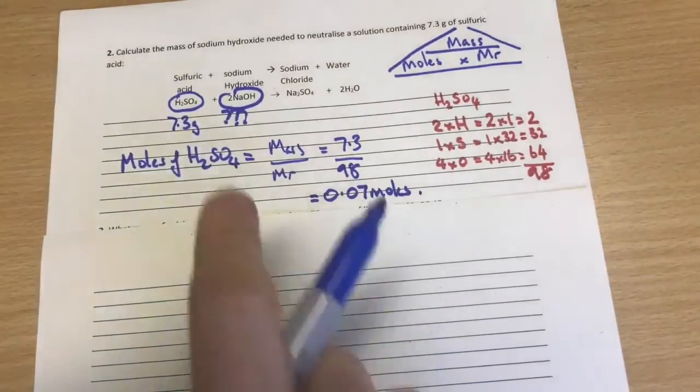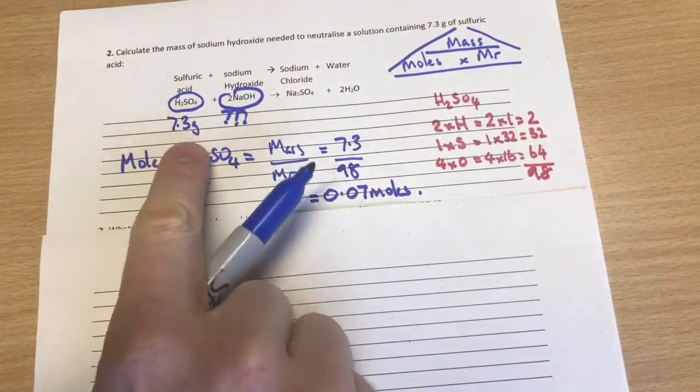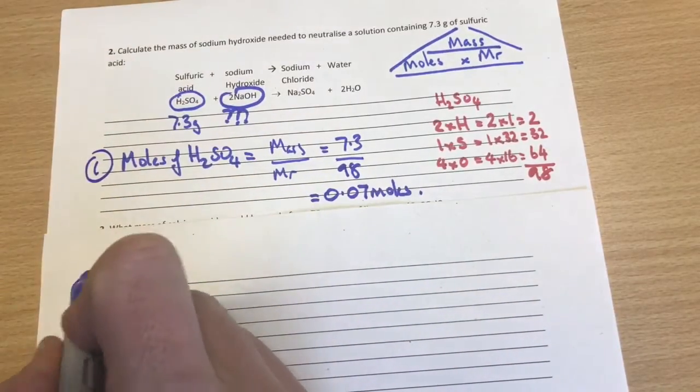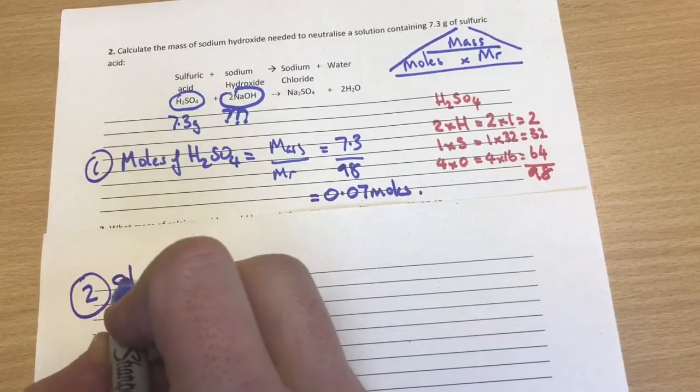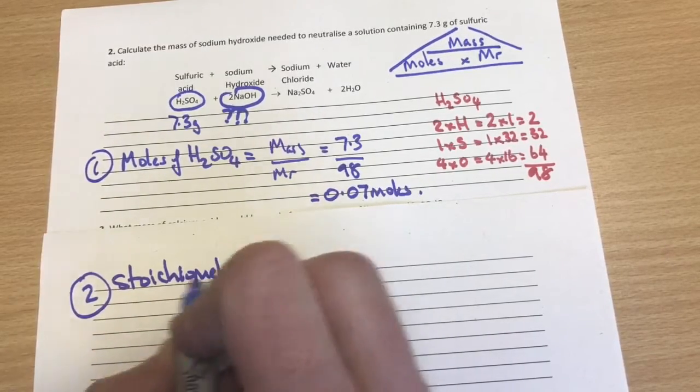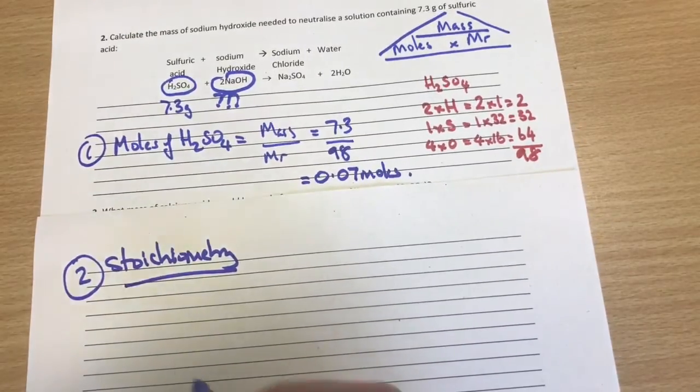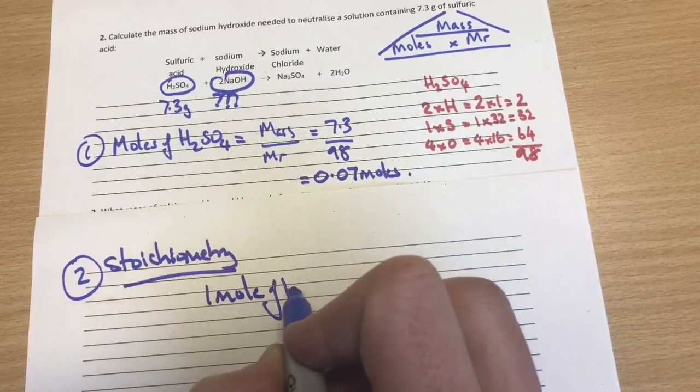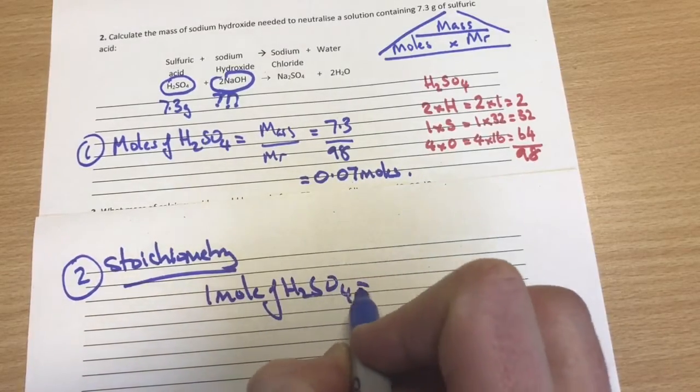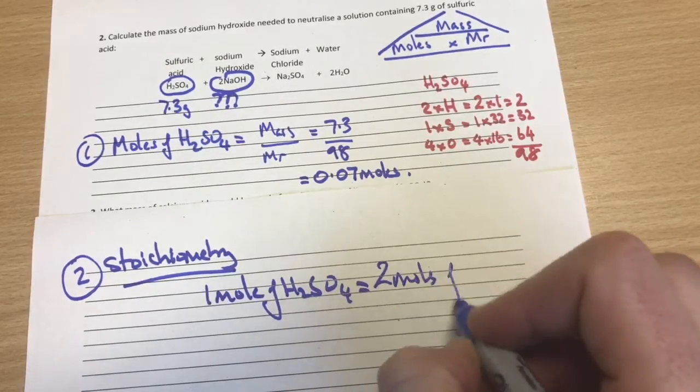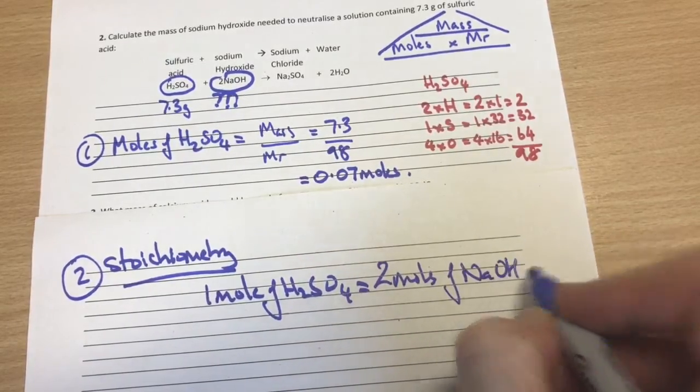So we now converted the mass of the sulfuric acid into moles. And that's stage one. Stage two. Stage two, we use the stoichiometry. Stoichiometry, remember, is the ratio of the atoms from the balanced equation. So from here we have got 1 mole of H2SO4 is reacting with 2 moles of the NaOH.